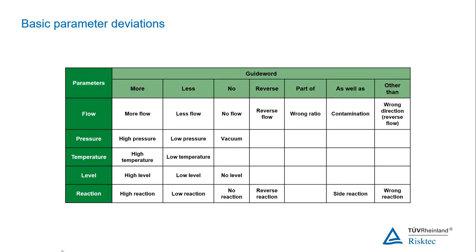Some of the fundamental process-related parameters, guide words, and deviations are given in this chart. For example: more flow, less flow, no flow, reverse flow, high pressure, low temperature. Can you think of any more examples?